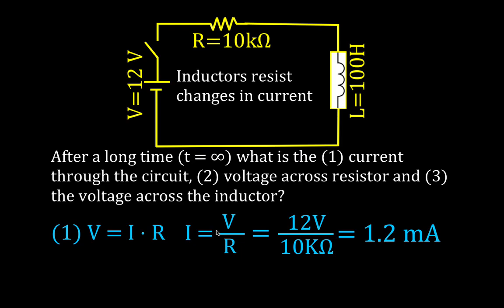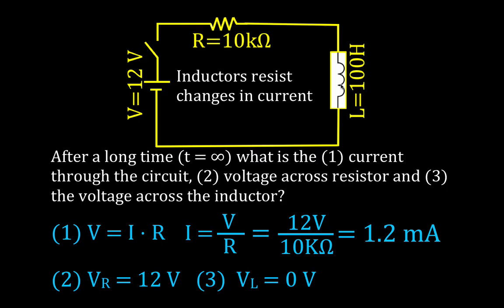After a long time, after the current has come to a steady state, we have 1.2 milliamps going through the entire circuit. The voltage across the resistor is Ohm's law: V equals I times R, so 1.2 milliamps times 10k ohms gives us 12 volts — all of the voltage is now across the resistor. Because the inductor is no longer resisting the change in the current, it's basically acting like a short or a long wire, so the voltage across the inductor is zero.